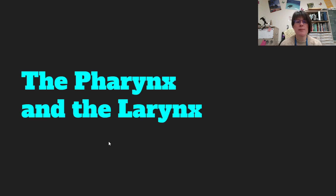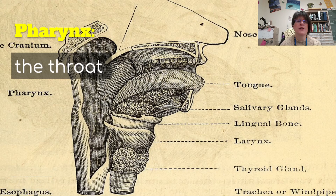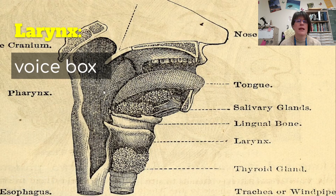Now let's talk about the pharynx and the larynx. The pharynx is usually called your throat — this area here is your pharynx, and it goes from your nasal cavity and your mouth to this area right here. Beyond that is the larynx, which is your voice box that contains your vocal cords that allows you to speak.